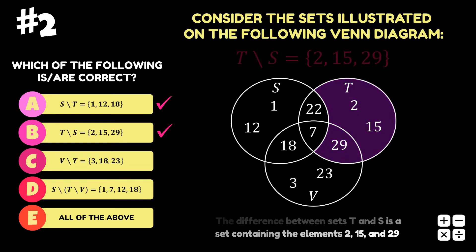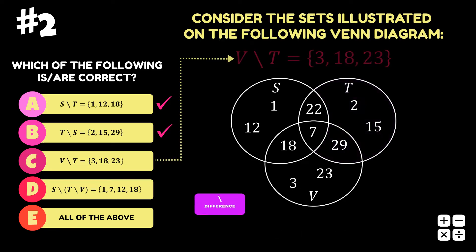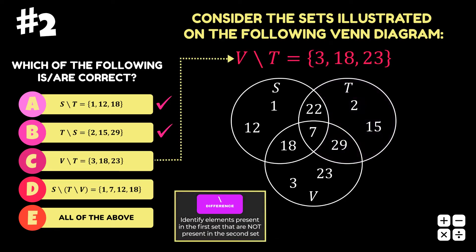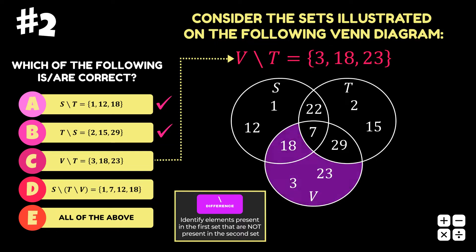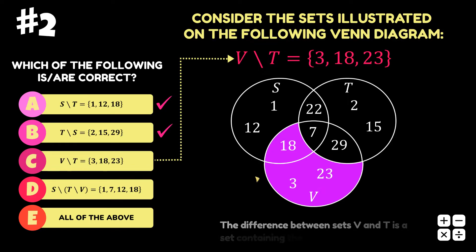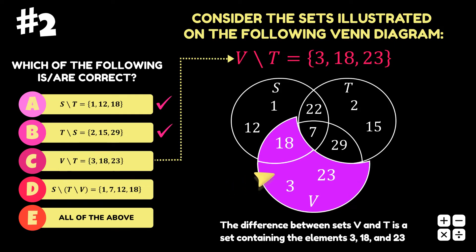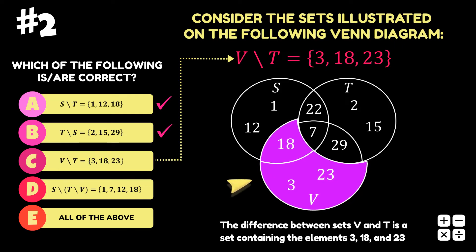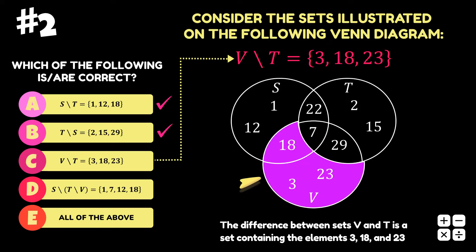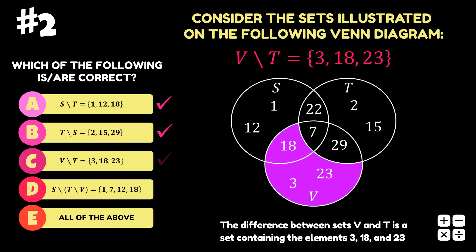Option C is the difference between sets V and T. Looking at the Venn diagram, the difference between sets V and T is the area occupied by set V that is not occupied by set T. Hence, the elements in that set are 3, 18, and 23. Therefore, option C is correct.